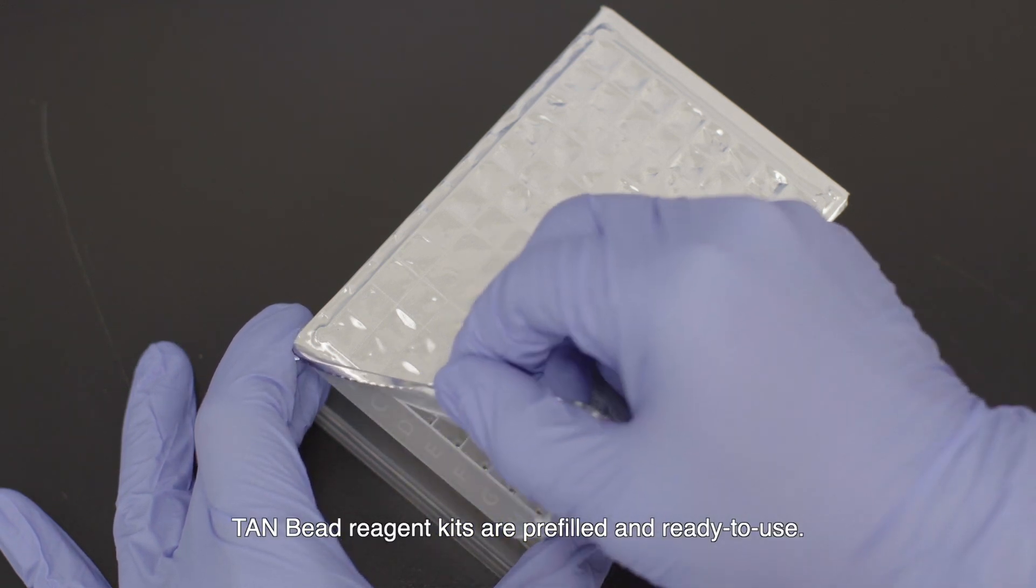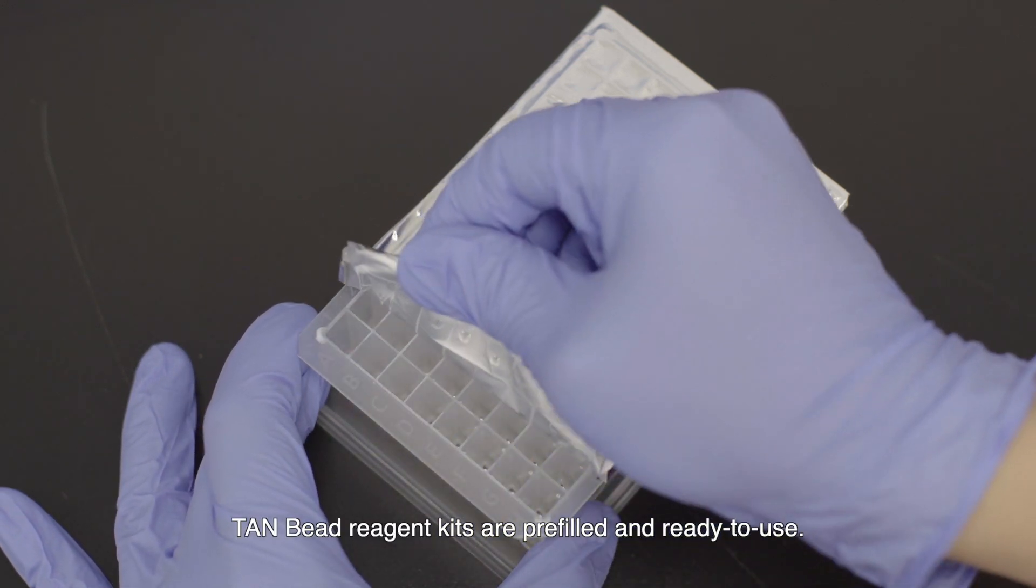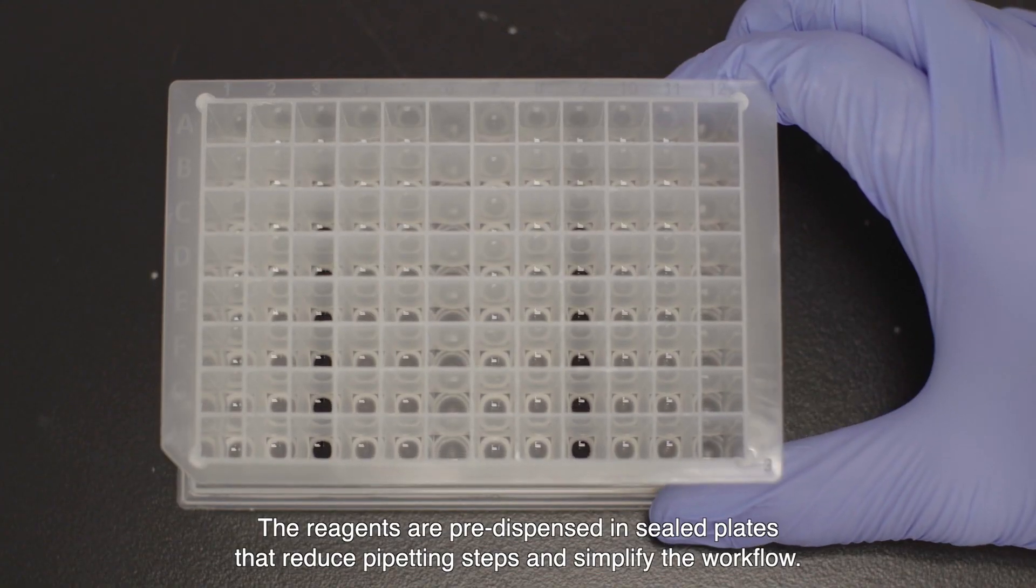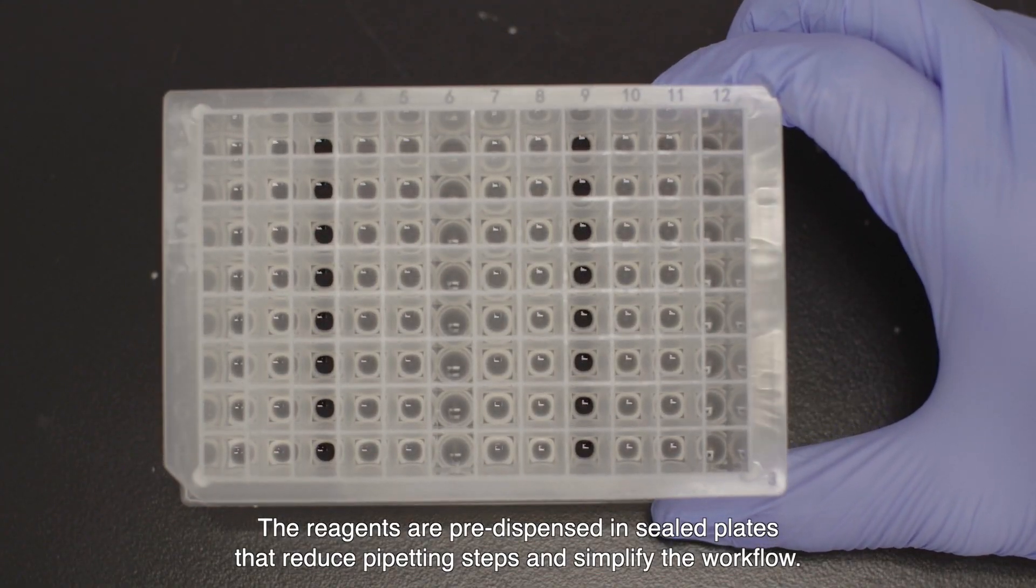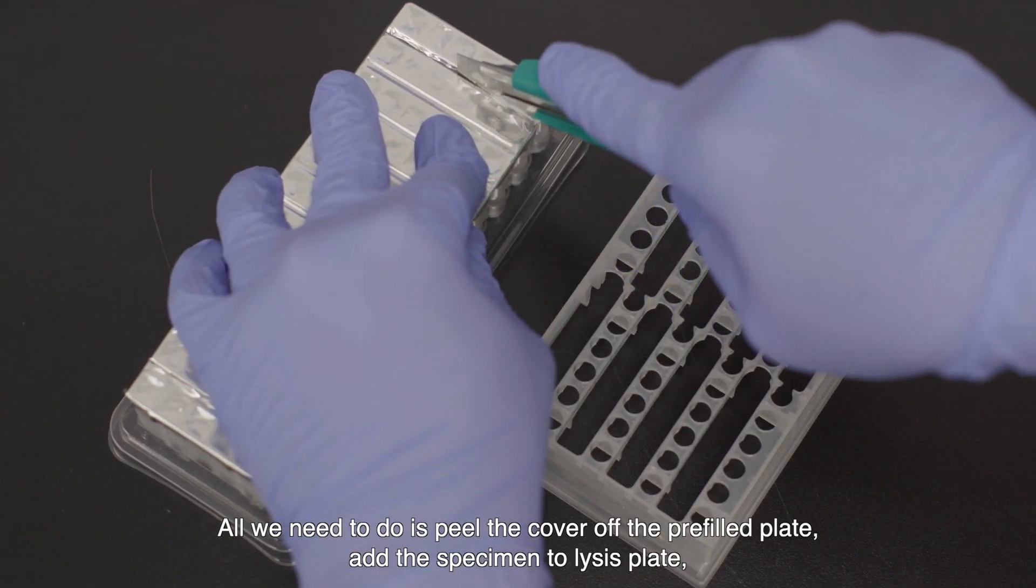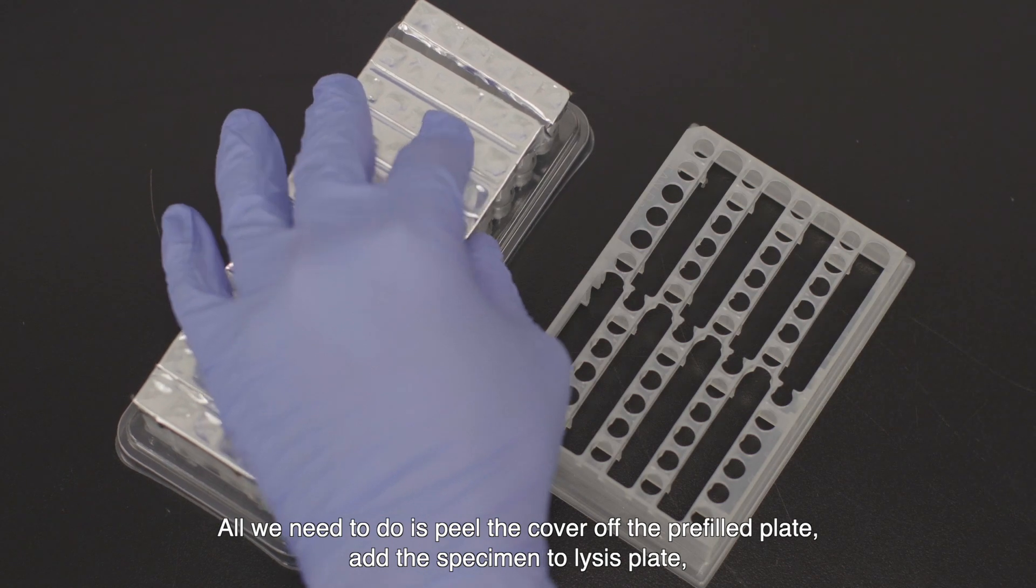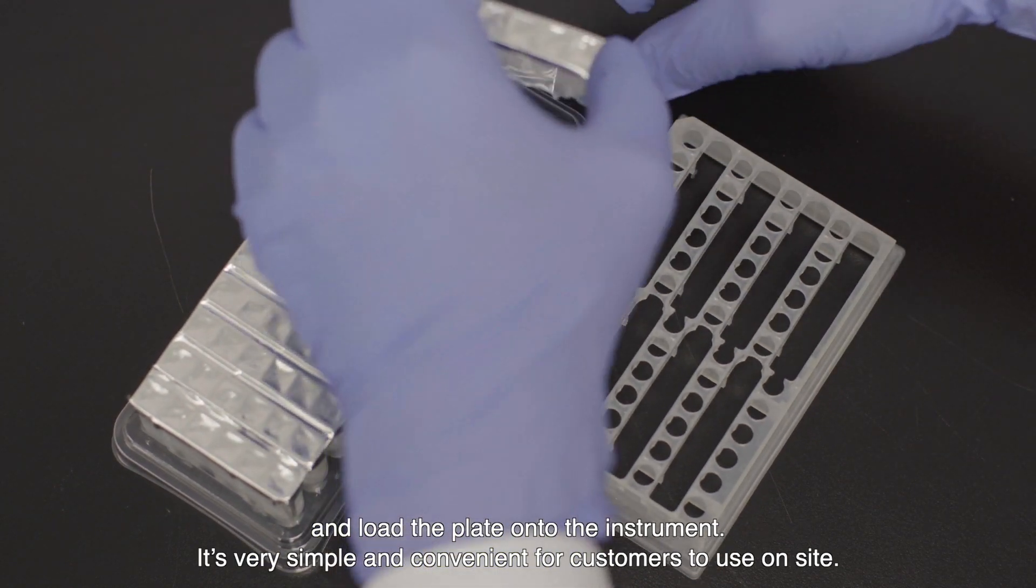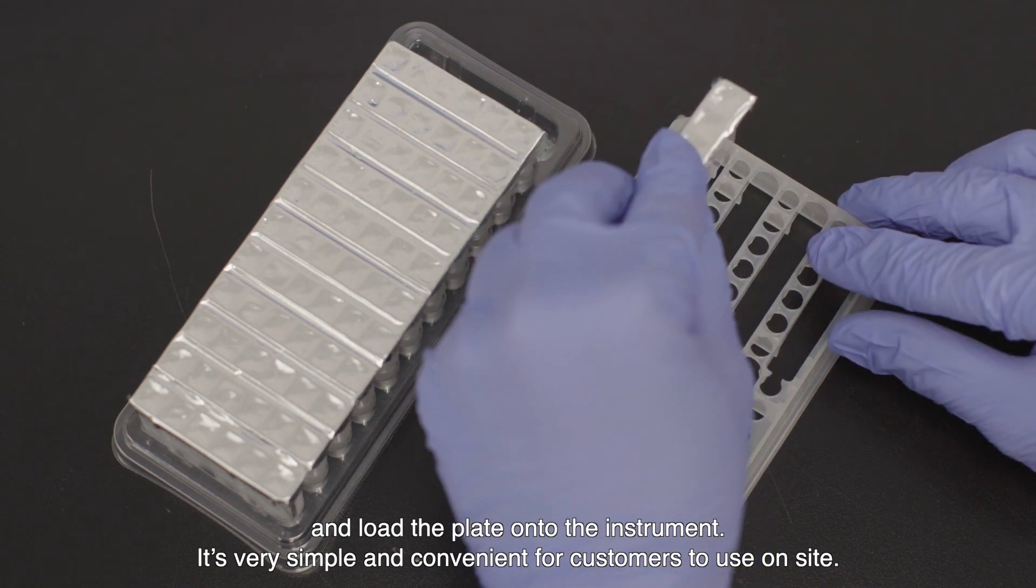TAM bead reagent kits are pre-filled and ready to use. The reagents are pre-dispensed in sealed plates that reduce pipetting steps and simplify the workflow. All we need to do is peel the cover off the pre-filled plates, add the specimen to the lysis plate, and load the plate onto the instrument. It's very simple and convenient for customers to use on site.